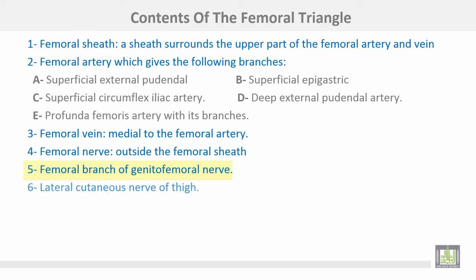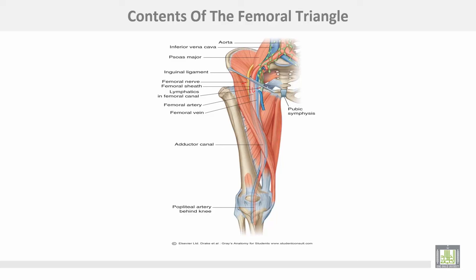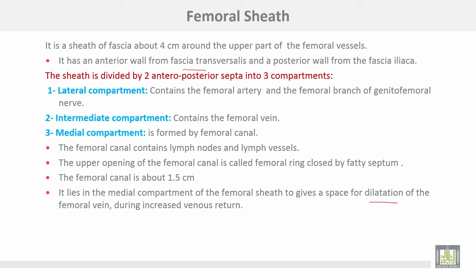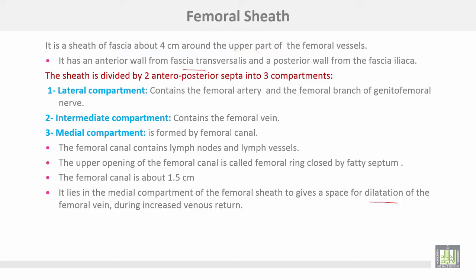The femoral nerve lies outside the femoral sheath. The femoral branch of the genitofemoral nerve travels with the femoral artery in the lateral compartment. Also present are the lateral cutaneous nerve of the thigh and deep inguinal lymph nodes. The femoral sheath is formed by fascia and is about four centimeters long around the upper part of the femoral vessels. It has an anterior wall formed by fascia transversalis and a posterior wall formed by fascia iliaca.